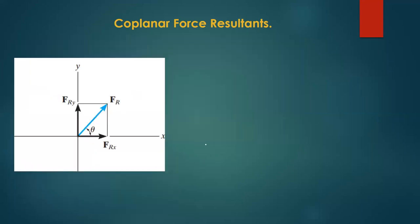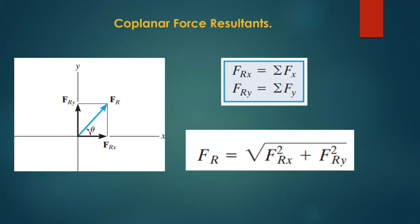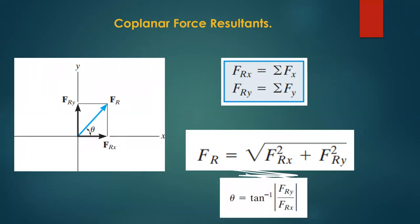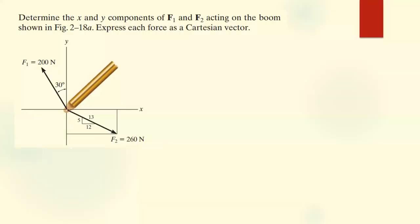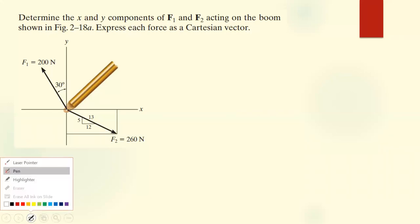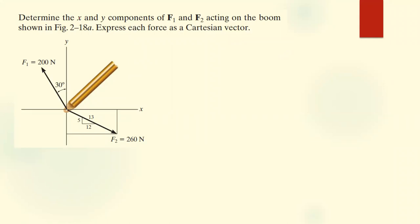For co-planar resultants, remember: the angle is found using the absolute values of the resultant components. Now let's quickly look at the worked example. We have this example which says: determine the x and y components of F1 and F2 acting on the boom shown, then express each force as a Cartesian vector.